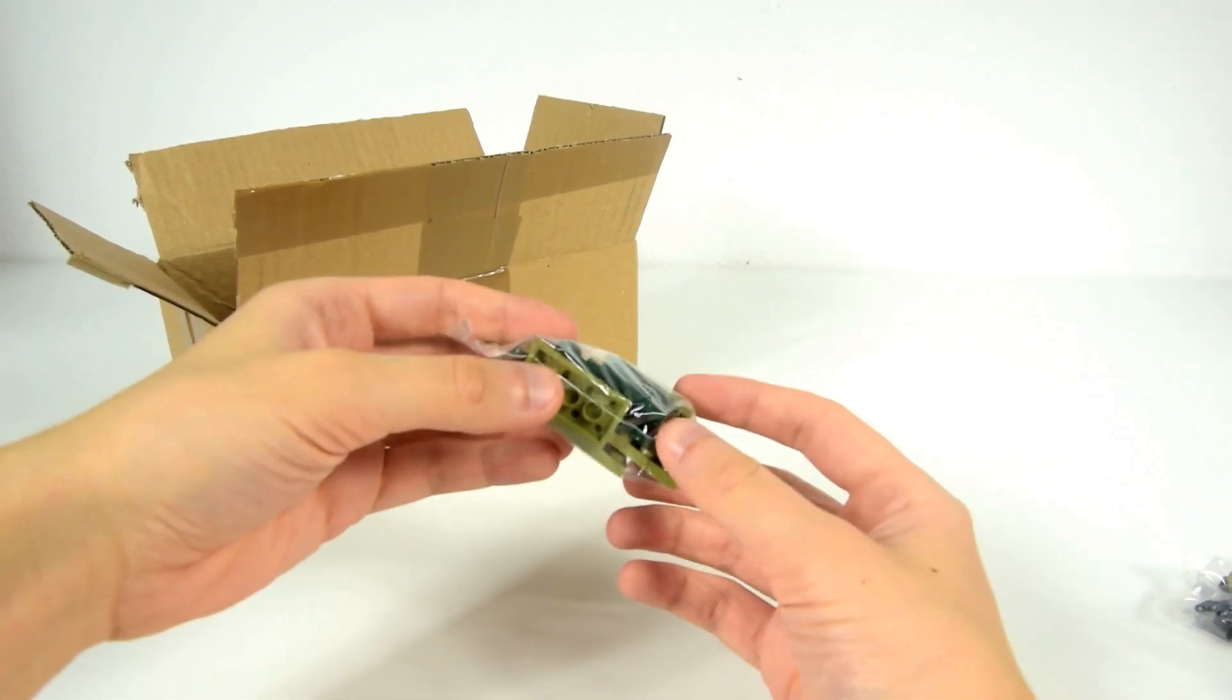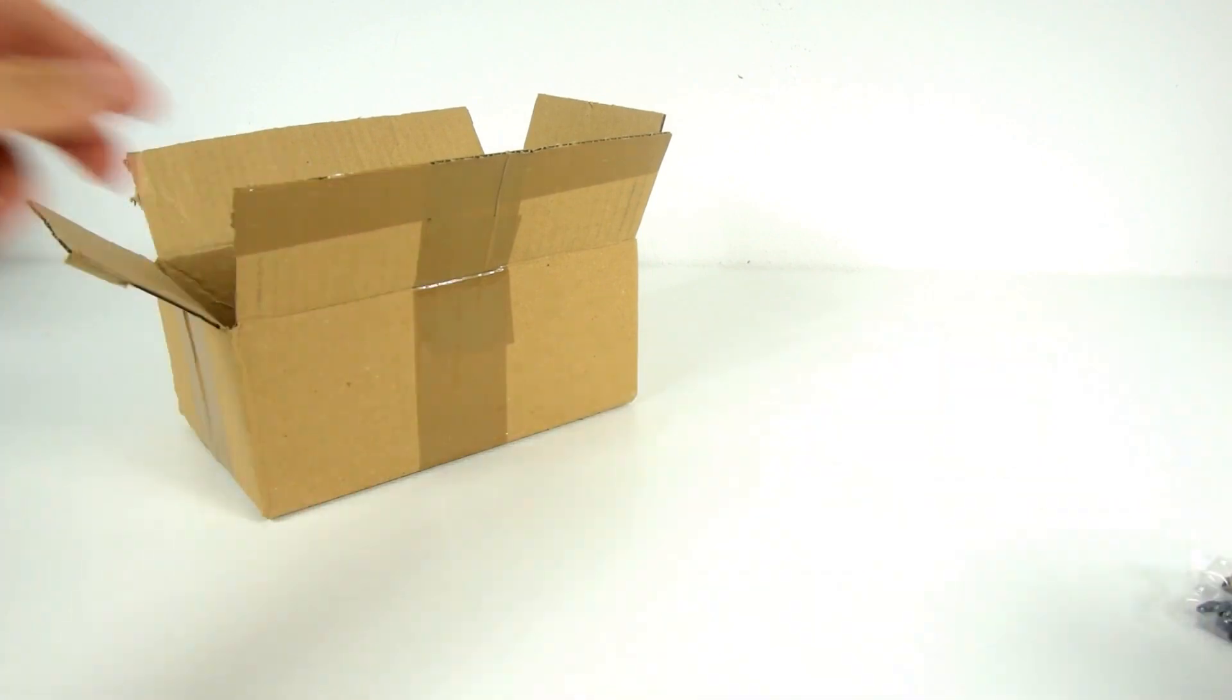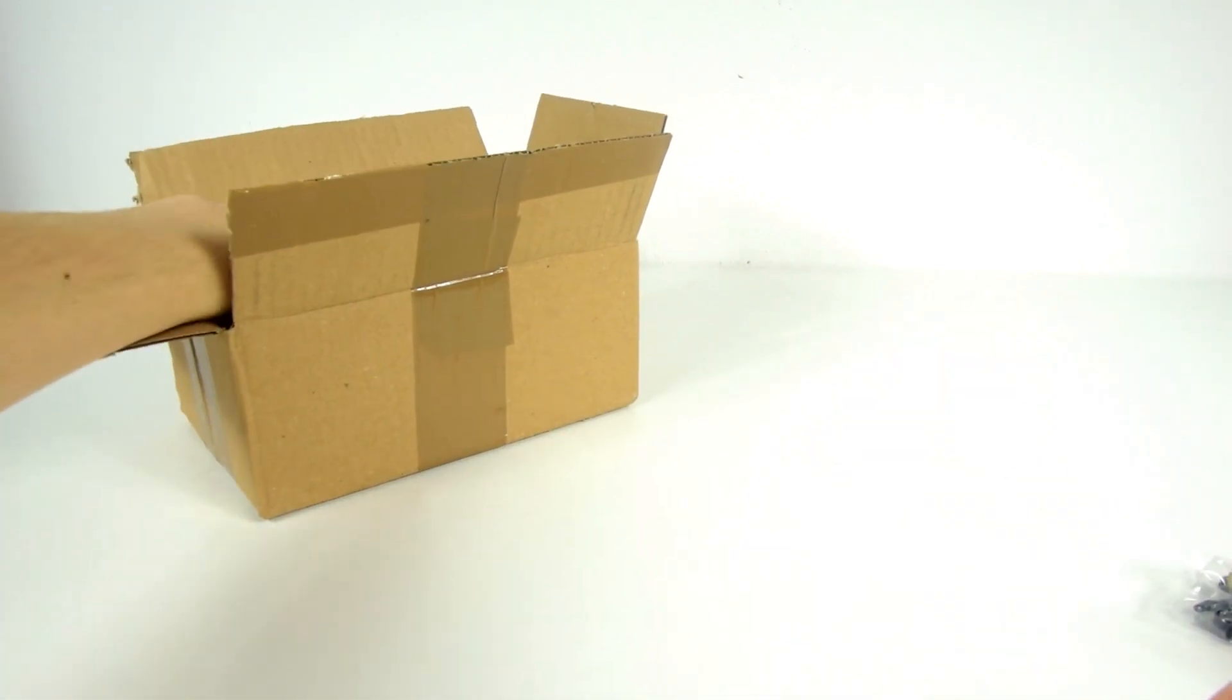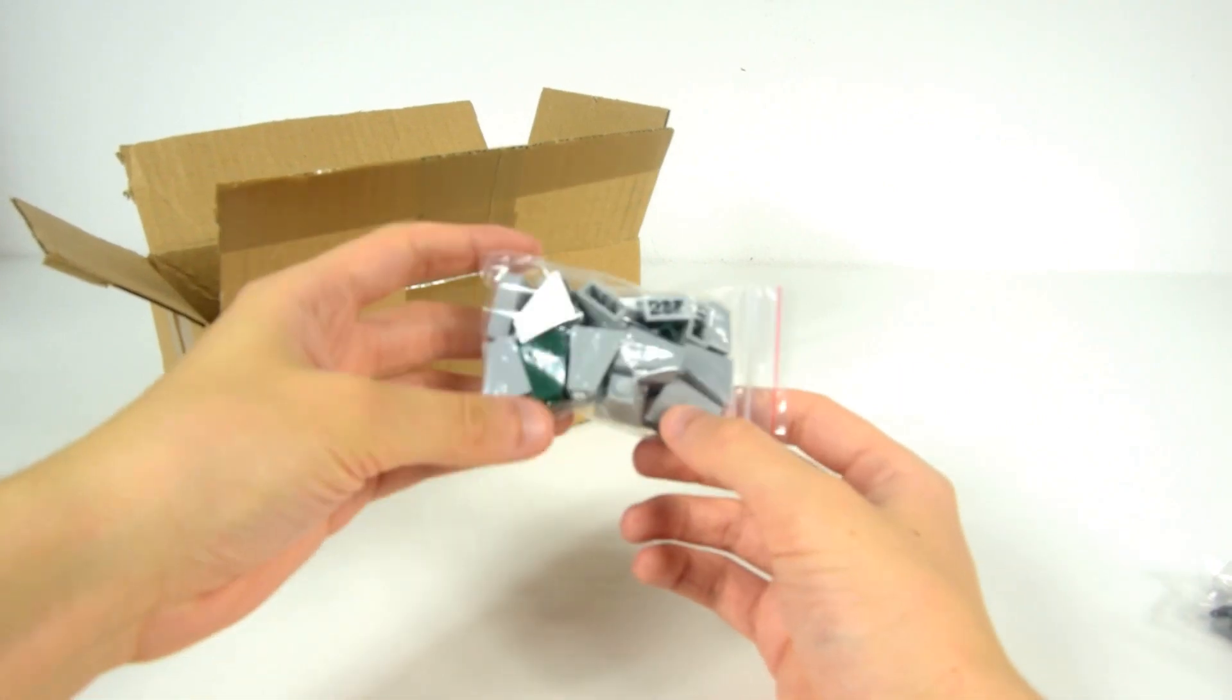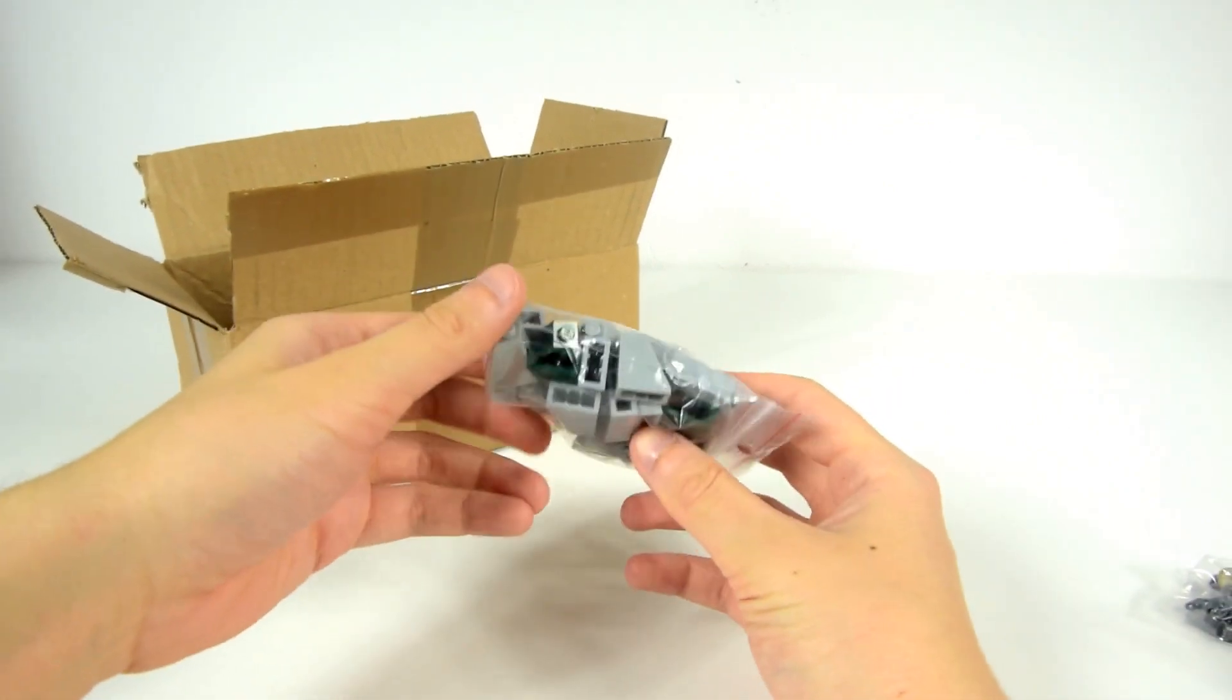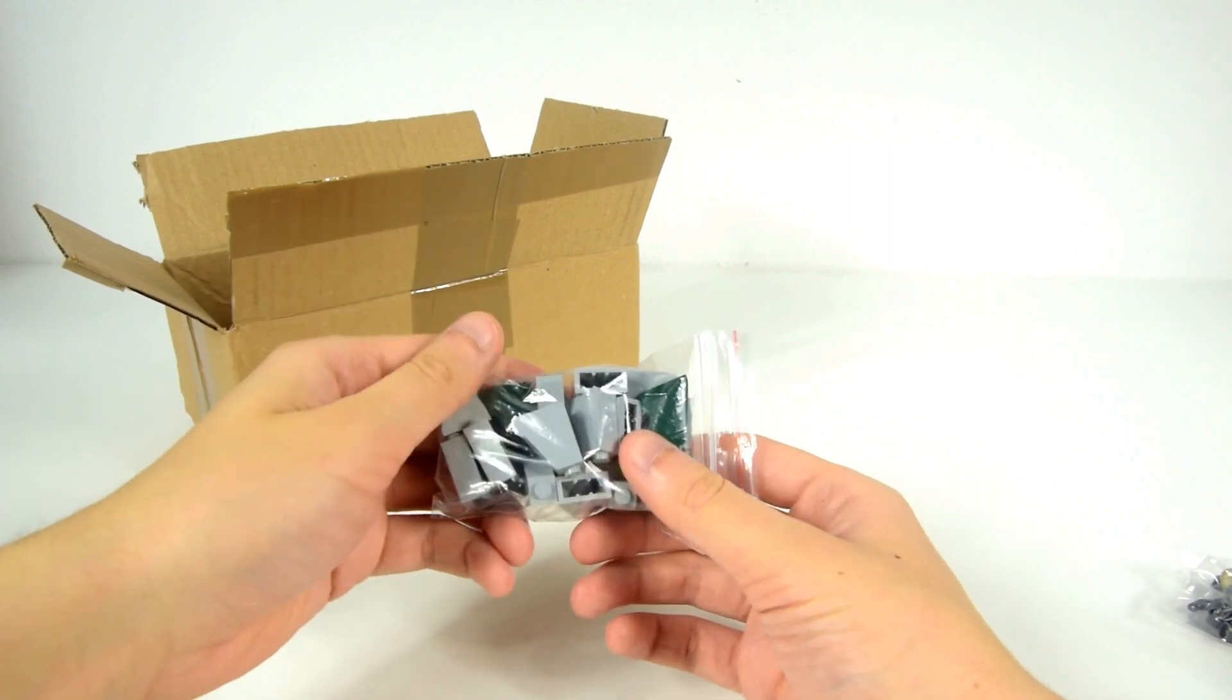2x4 olive green plates as well as 2x3 dark green plates. And the next is... Oh, that's very useful. 2x3 slope bricks in mainly light bluish grey and also dark green.